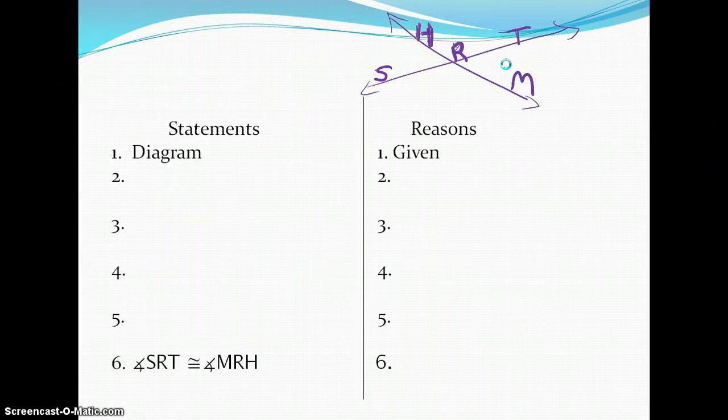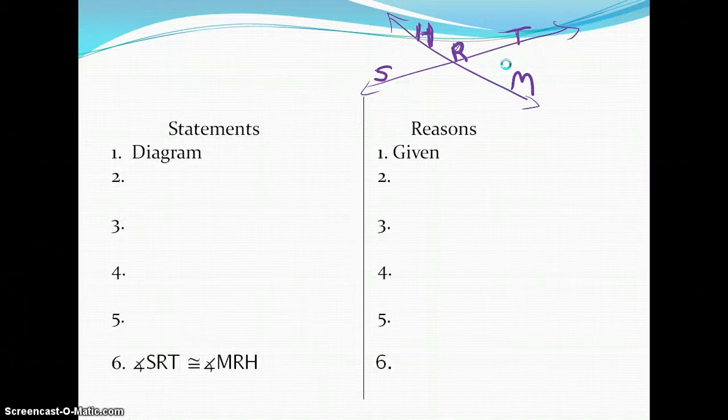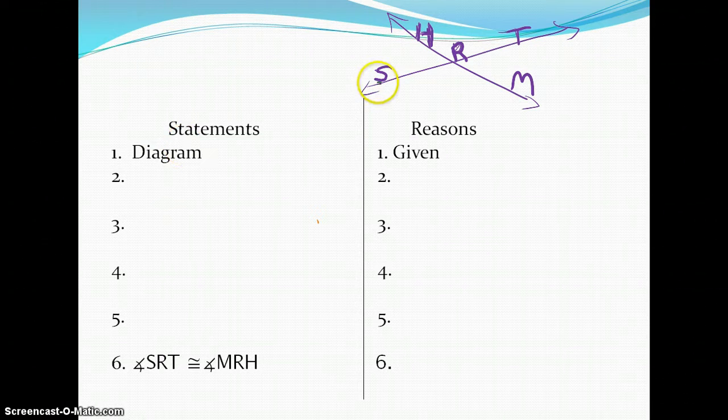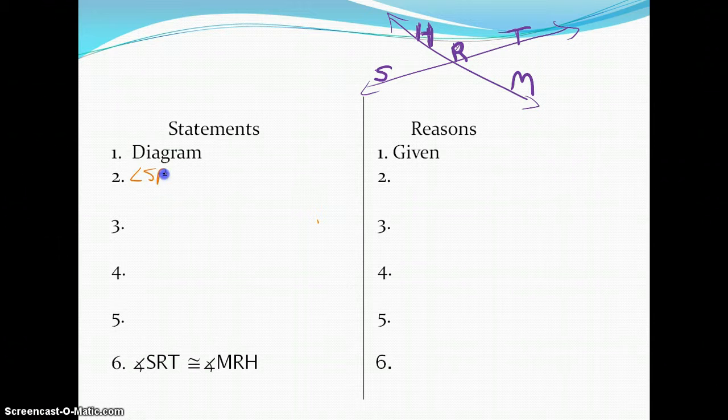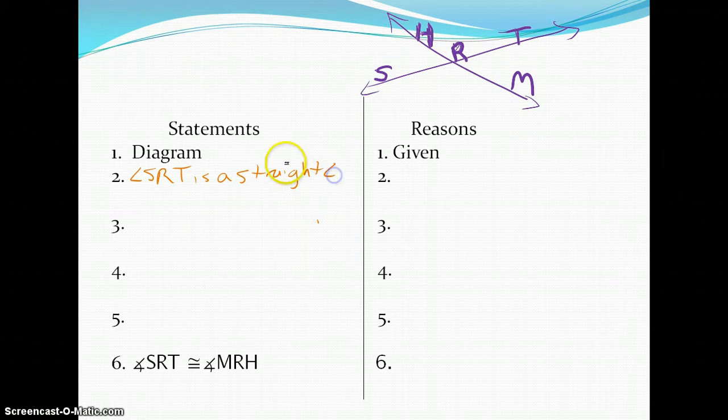I've got my beginning. I've got my end. I've got to fill in the middle and give myself reason. I'm going to start out recalling that in 1.3, we said that we can assume straight angles from a diagram. I'm going to do just that. I'm going to assume from my diagram that that is a straight angle. I've got angle SRT is a straight angle. Reason being, I assumed it from the diagram.